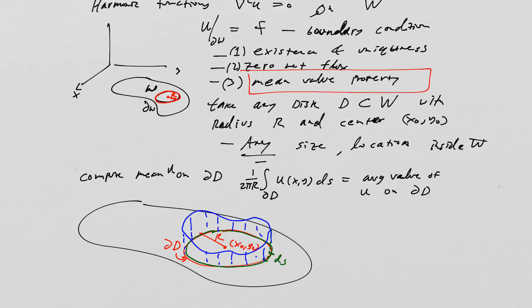The mean value property says that if U solves Laplace's equation, then the mean value that we just computed is equal to the value of U at the center of the circle. That's an important value - it says basically averages are equal to the center.